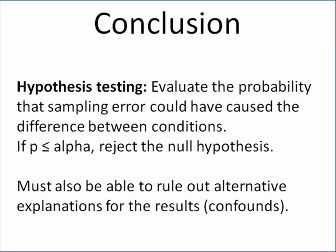So here's a conclusion for this presentation on hypothesis testing. First, with hypothesis testing, we evaluate the probability that sampling error could have caused the difference between the conditions, assuming the null was true — it's all about evaluating the null hypothesis. If the probability is less than or equal to our alpha level, we reject the null hypothesis.